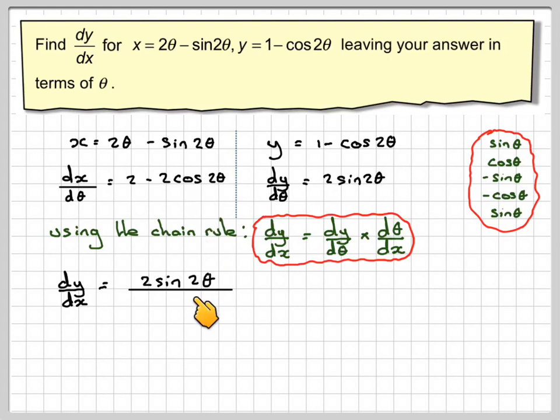Now, there are identities for this and this. Sine 2 theta is 2 sine theta cos theta, and if you choose the right one for this,